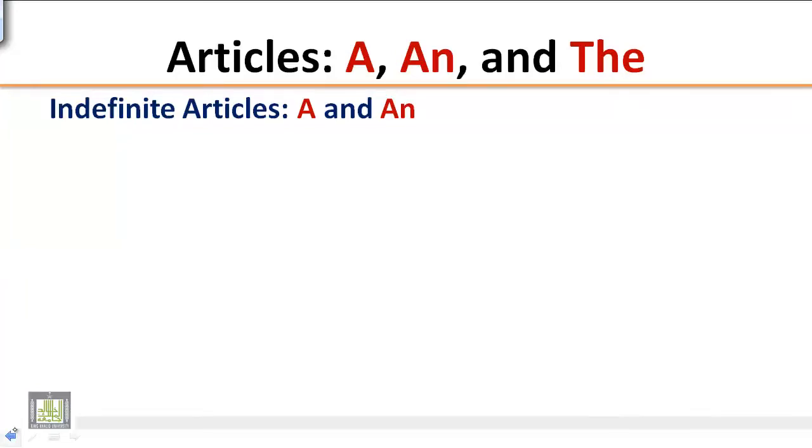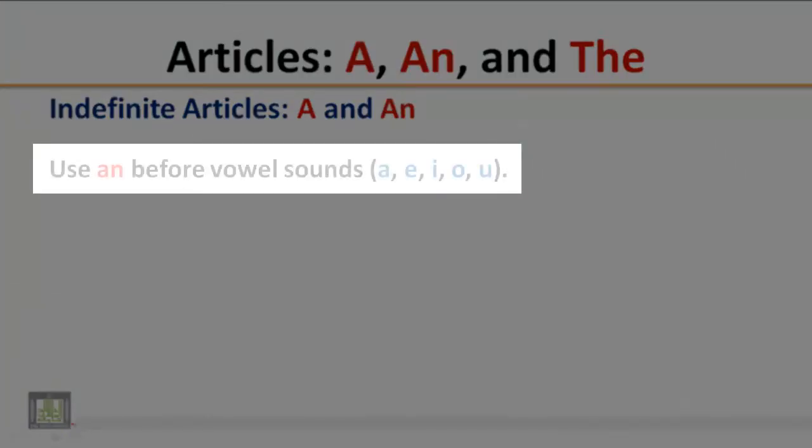Indefinite articles, a and an. Use an before vowel sounds: a, e, i, o, u.